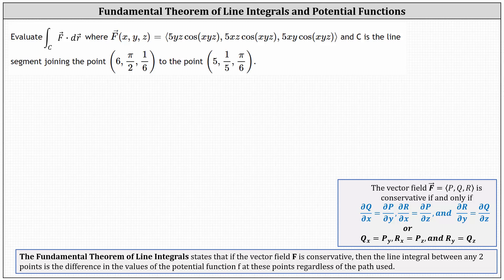Evaluate the line integral along the curve C of f dot dr, given the three-dimensional vector field f, where C is a line segment joining two given points. If the given vector field is conservative, we can use the potential function and the two endpoints to evaluate the line integral.